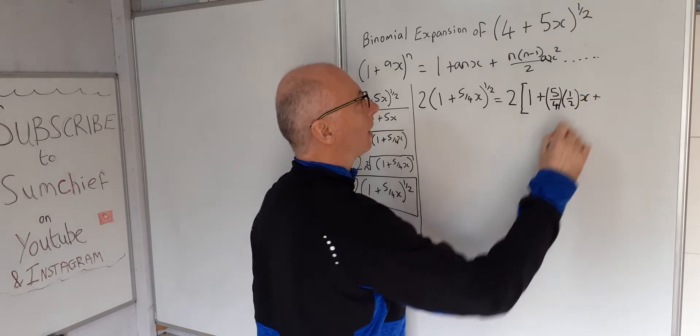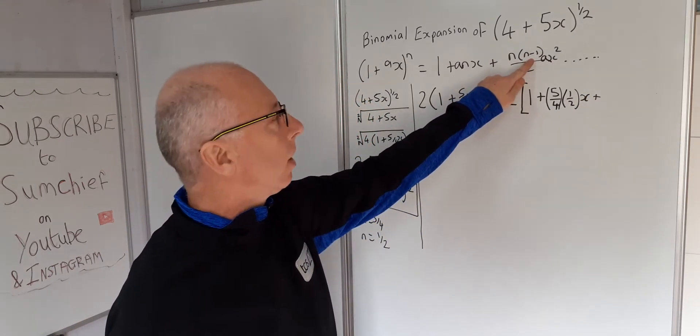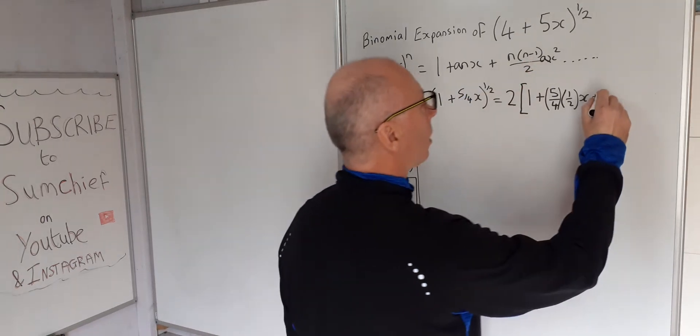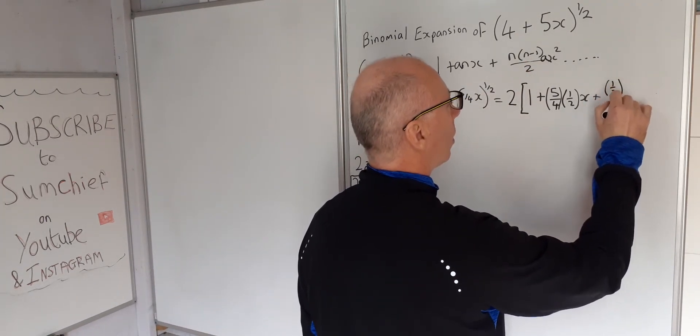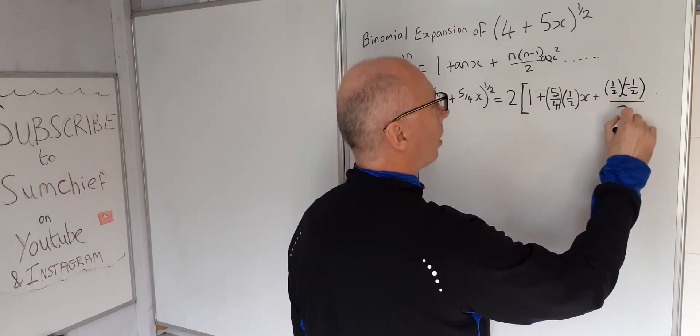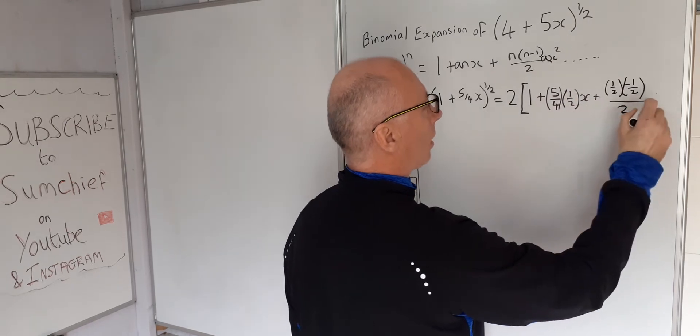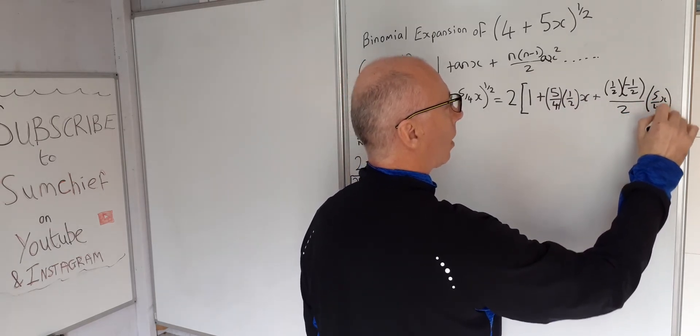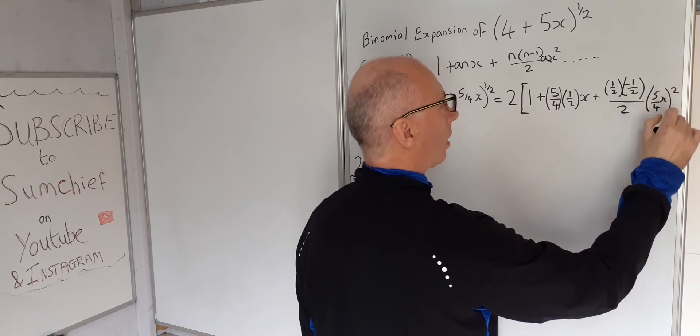And then we add, n times n minus 1, n is a half, so that becomes half times minus a half, over 2, and then the ax squared, so that becomes 5 over 4 x squared.